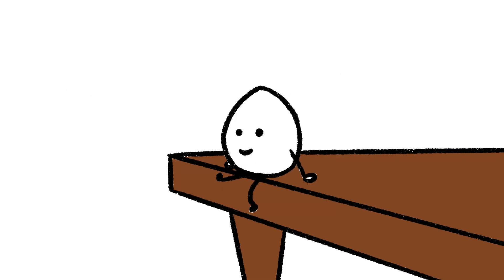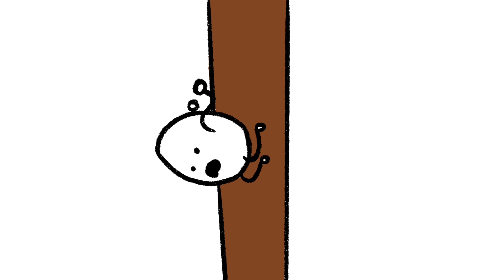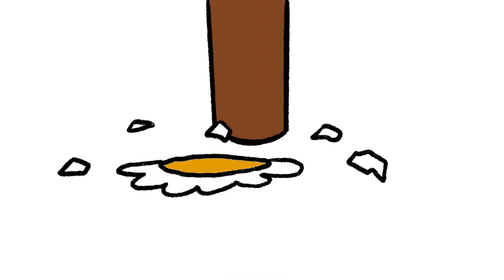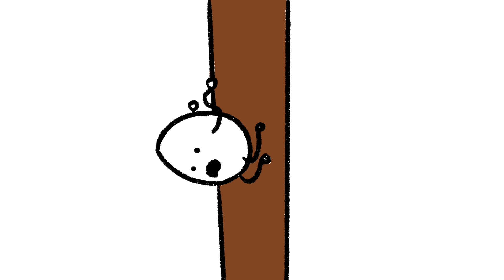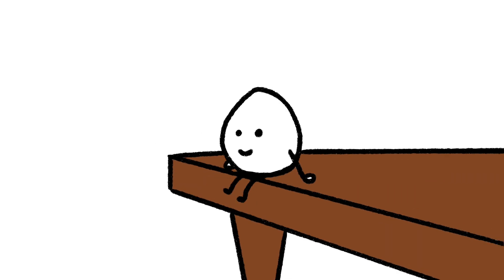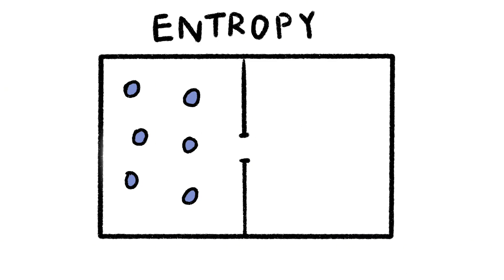A common example physicists use is the egg rolling off of the table. We see that the egg splats and shatters, but we never see the egg spontaneously unsplat and put itself back together on the table. Why this happens and why there's a preferred direction of time has something to do with entropy, or how much disorder is in a system, but that'll be for another video.